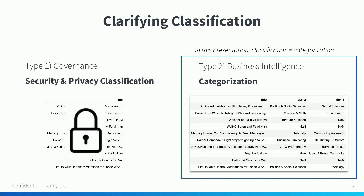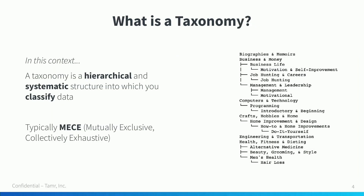Data classification is a term that I'm going to use a lot in this presentation, so I first wanted to clarify how I'll be using it in this context. In the context of business intelligence, classification can be thought of as synonymous with categorization, or sorting each record into a category scheme such as a taxonomy. A taxonomy is a hierarchical and systematic structure into which you can classify your data. On the right you can see an example of a taxonomy — one of book genres, which will become relevant over the course of this presentation.